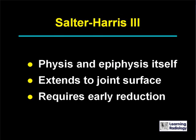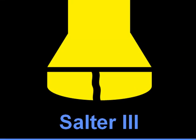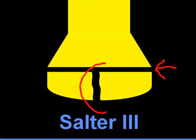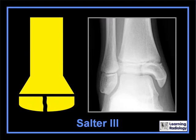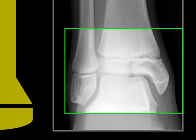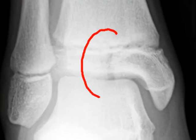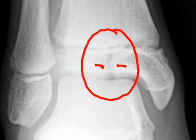Salter-Harris 3 fractures are fractures through the epiphyseal plate and the epiphysis itself. Because they involve the epiphysis, they extend to the joint surface and can involve the articular cartilage, resulting in damage to it. They require early reduction. Here is an example of a Salter-Harris 3 fracture of the distal tibia. You can see a linear radiolucency that extends through the epiphysis to the articular surface, resulting in damage to the articular cartilage.